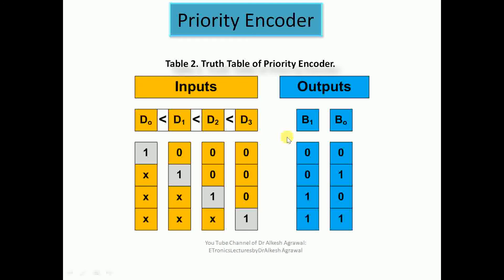Now let us take another important type of encoder called a priority encoder. This table contains a lot of information. We have inputs d0, d1, d2, d3, with priority indicated by the less-than arrow. d3 has the highest priority and d0 has the lowest priority — meaning d3 > d2 > d1 > d0.